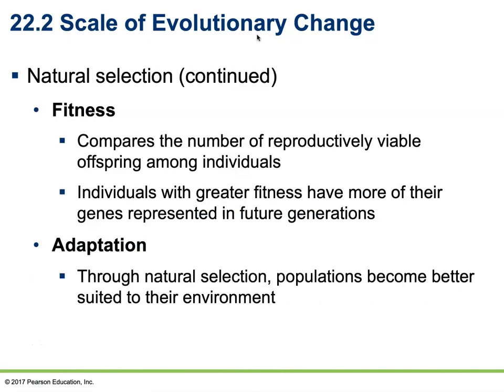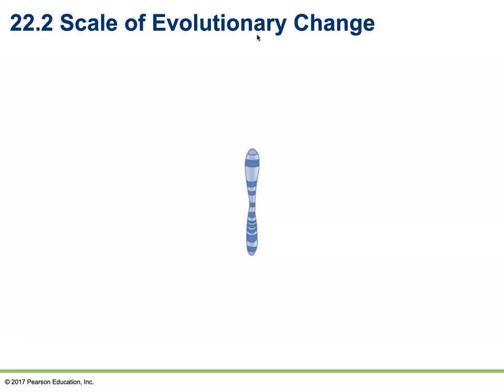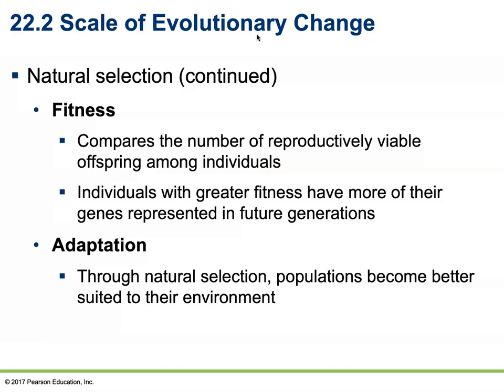According to Darwin, an individual's evolutionary success can be measured by fitness, which compares the number of reproductively viable offspring among individuals. Individuals who have more successful offspring will have more of their genes represented in future generations. It is important not only to be healthy, but also to have reproductive success. Over many generations, individuals with higher fitness will experience greater reproductive success and produce offspring that are also likely to be fit. Genes that increase fitness will contribute more to the genetic landscape of the population, while those conferring lower fitness will be weeded out — this process is known as adaptation.